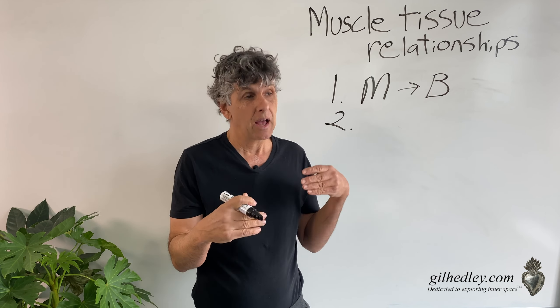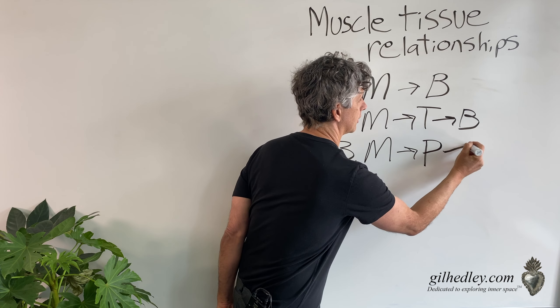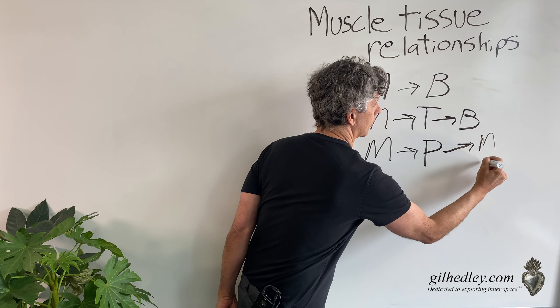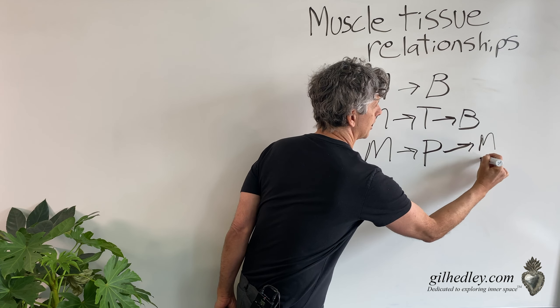Number three: muscle can relate to other muscle tissue or to bone via what I call perifascia — muscle relates through perifascia to muscle or bone. Perifascia is basically a membranous, slippery, wet kind of fascia that enables there to be differential movement between what's on either side of it.